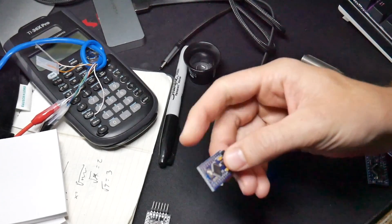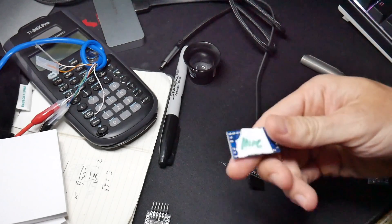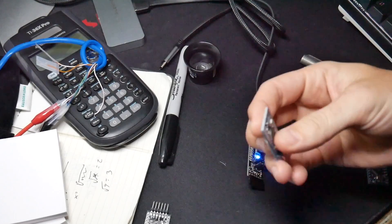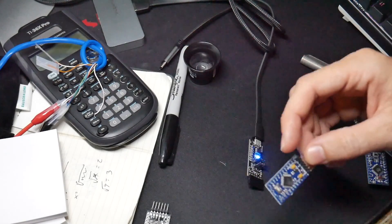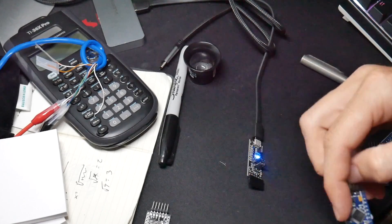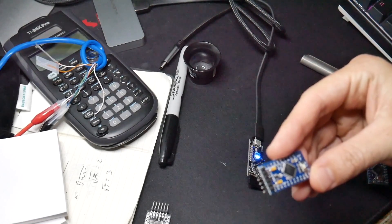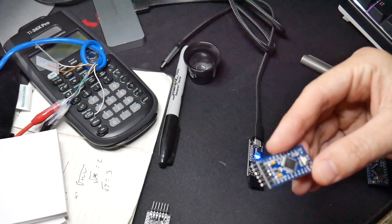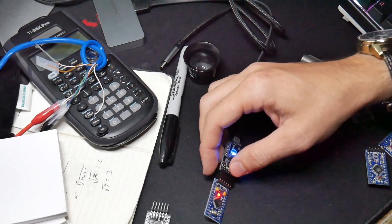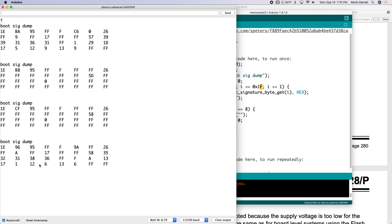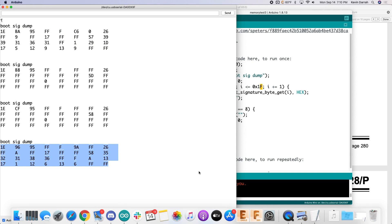And then I happen to have a couple Pro Minis on hand as well. This one I got from, I don't know, it's labeled DIY mall, who knows where it came from. But it actually looks like a genuine part on there. So this is an ATmega328P with a date code of 2015. So let's go ahead and try this one out. So this one actually reads out very close to the genuine part. So this one may be okay, and have a real genuine ATmega328.